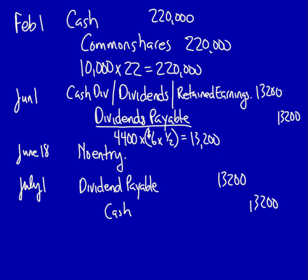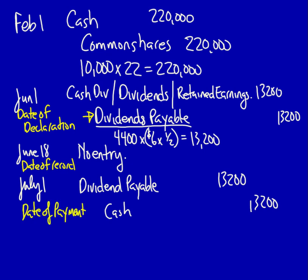Let's have a quick recap of the entries required to record a cash dividend. First, on the date of declaration, we record the legal liability to pay a dividend at some point in the future. Second, on the date of record, there is no entry — all we're doing is listing everybody's name. Finally, on the date of payment, we record the cash payment to the shareholders. In my next video, I'll continue on and show you how to record a stock dividend.